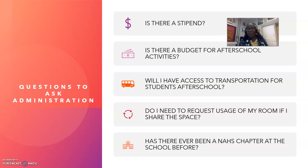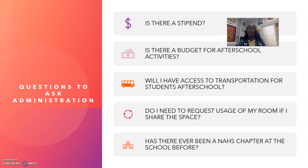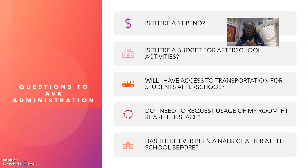Then think about these things you want to ask your administration. Is there a stipend? Because they won't give it to you if you don't ask. Is there a budget for after-school activities? And for me, the most important one was: will I have access to transportation for our students after school?